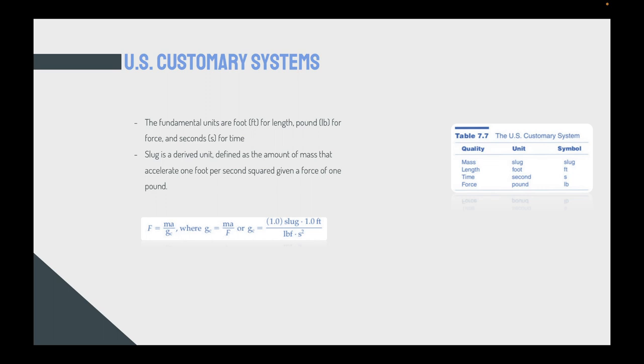The US customary system: the fundamental units for the US custom system are foot for length, pound for force, seconds for time. It's okay to mention that slug is a derived unit, derived as the amount of mass that accelerates one foot per second squared given a force of one pound. You can see the basic units for the US custom system: mass is slug, length is foot, time is seconds, force is pounds.